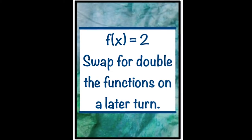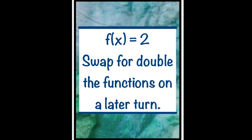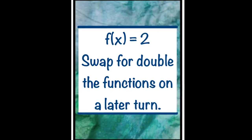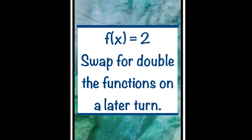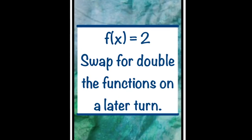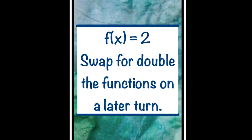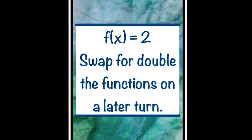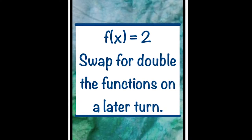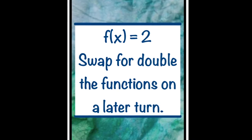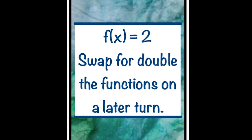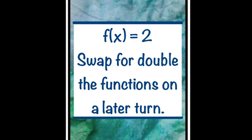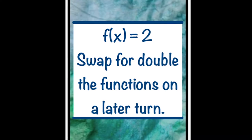The second bonus card is a swap for double the functions card. Play this card on one turn. On a future turn, before everyone else reveals their cards, call out 'Functions Go!' Put the F of X equals 2 card back in your hand, then place two Functions Go cards face down on the table.